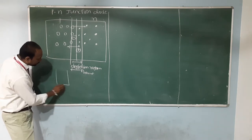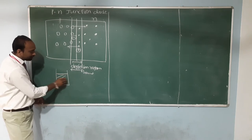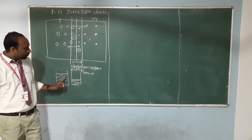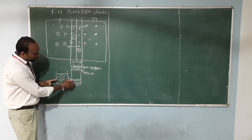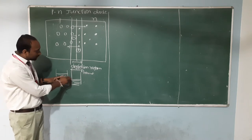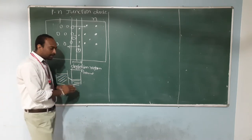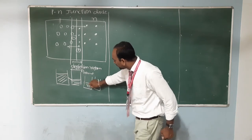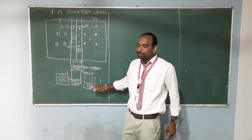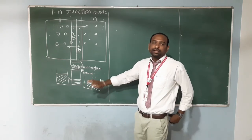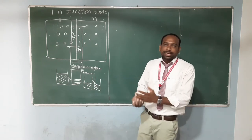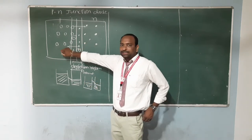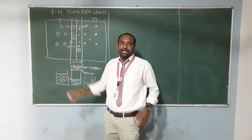Suppose we have one beaker with water level up to a certain point, and we take another beaker where the water level is lower. There is a difference in water levels. When you combine these two beakers, the water will flow from the higher level to the lower level. Up to what time will it flow? After a certain time, the water level in both beakers becomes equal, and there is no flow from one beaker to the other. After that, you have to apply some external energy to send water from one beaker to the other. Similarly, once the charge carrier gradient is equal on both sides, charge flow will stop.